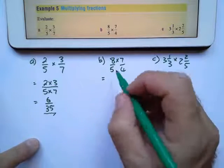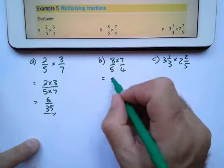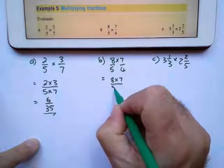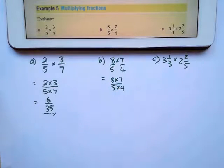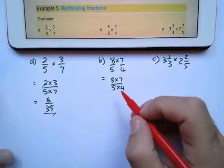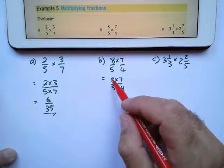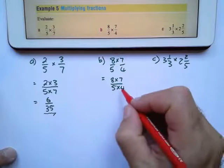Same rule for B. First write it as one fraction: 8 times 7 over 5 times 4. I'm going to see if I can cancel anything. I can see that 8 is divisible by 4 and 4 can go into itself.